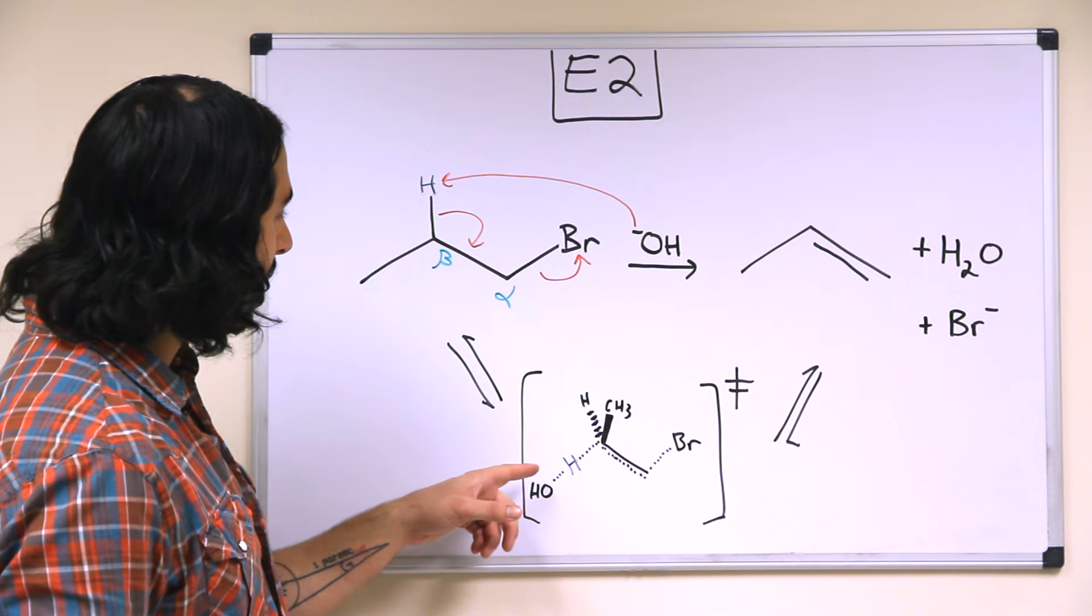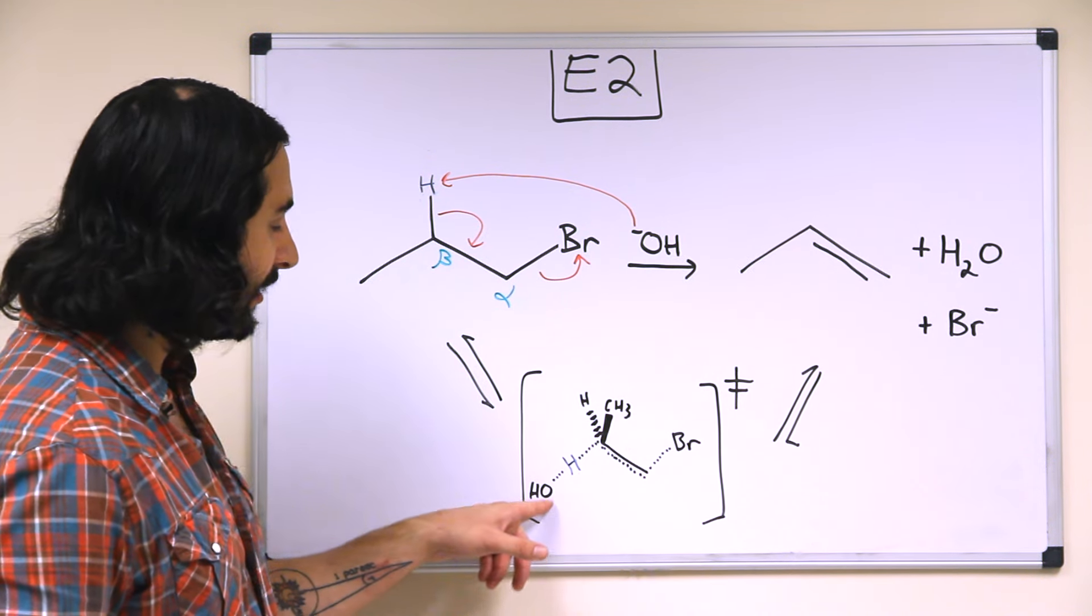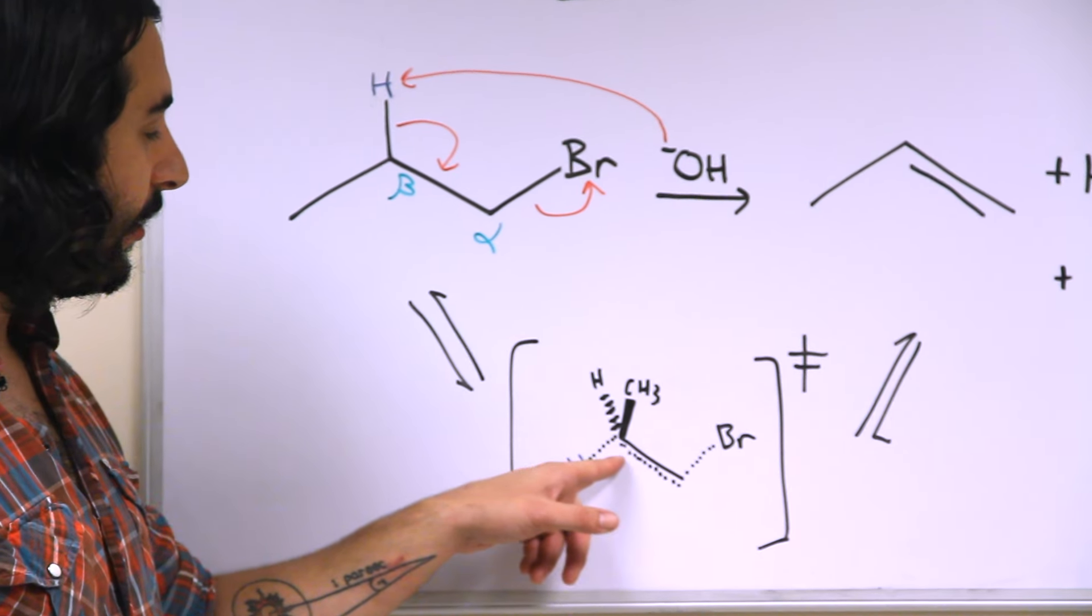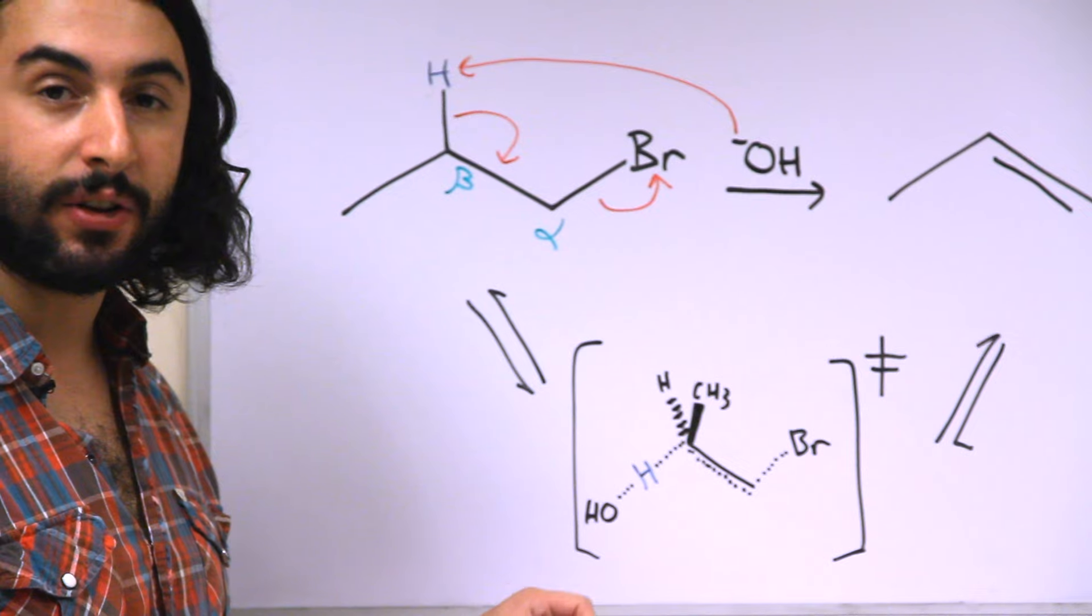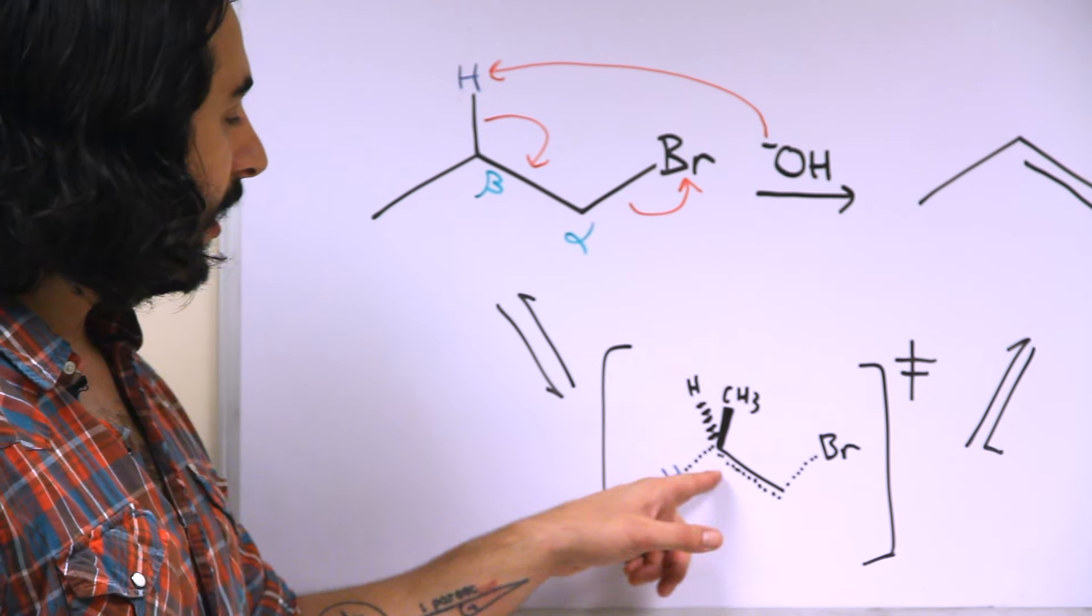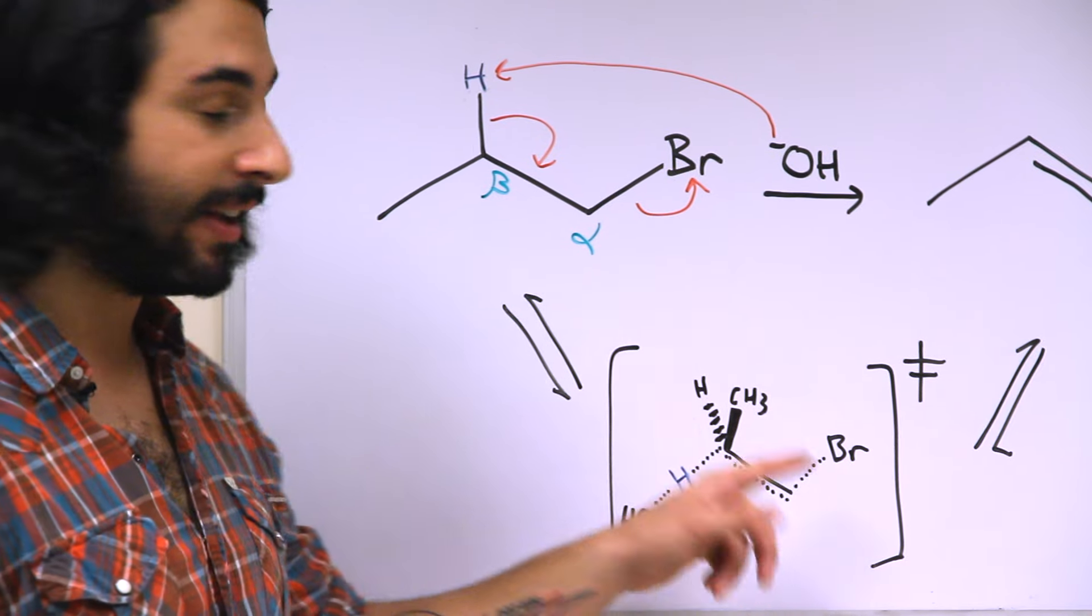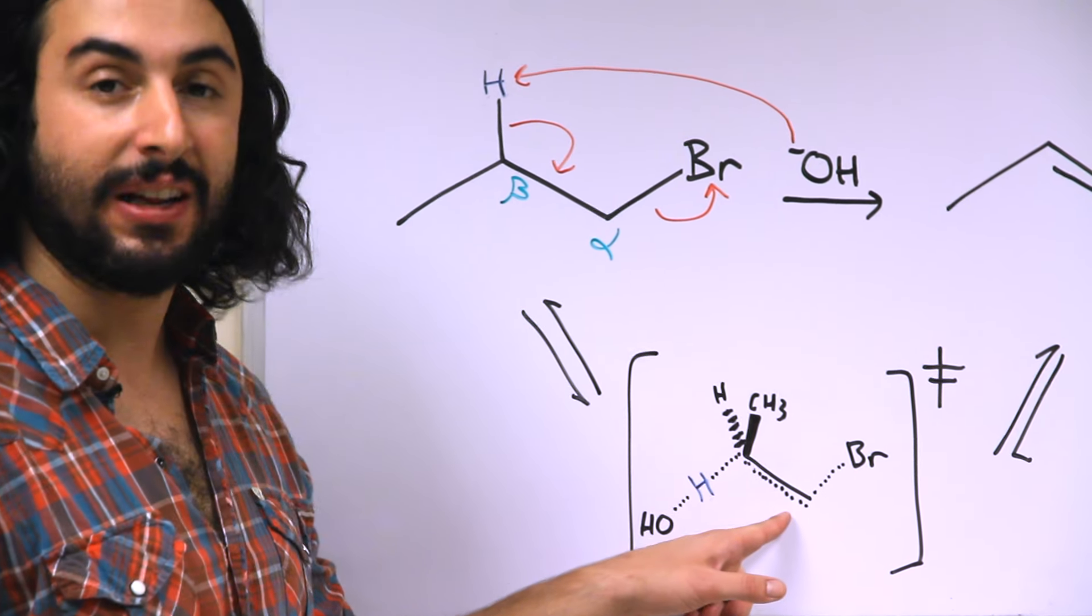So here we can see that the hydroxide is weakly forming a bond to the proton that's being extracted as the bond between the proton and the carbon is weakening. As well, the bond between the carbon and the leaving group is weakening and the pi bond begins to materialize.